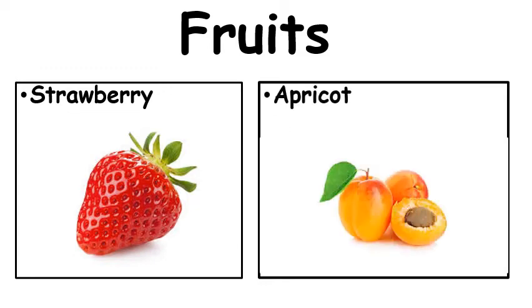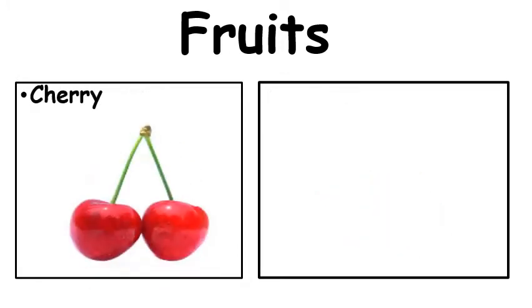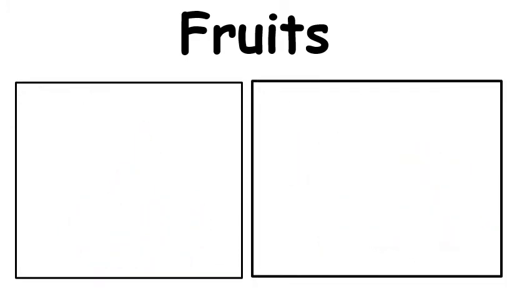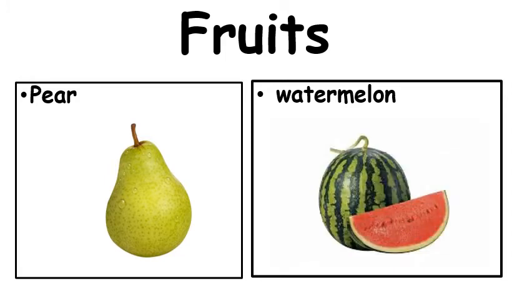This is an apricot. Apricot can be yellow or sometimes orange. This is a cherry. This is an orange. This is a pear and this is a watermelon.